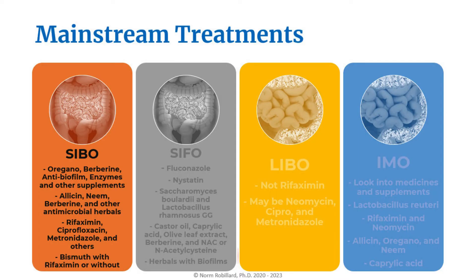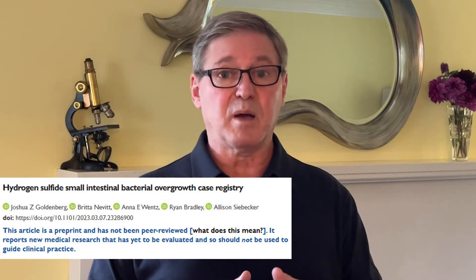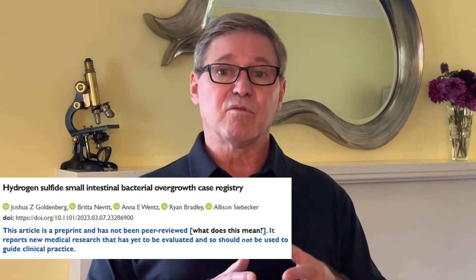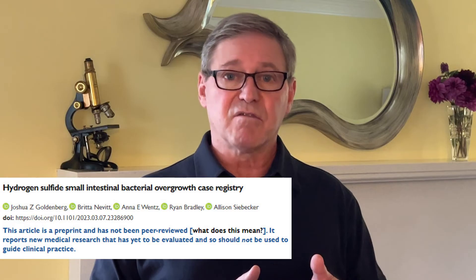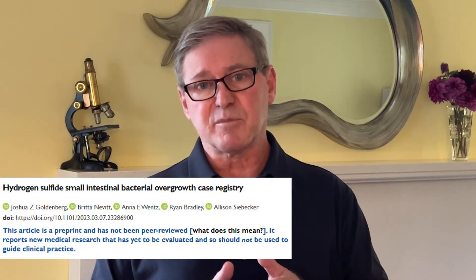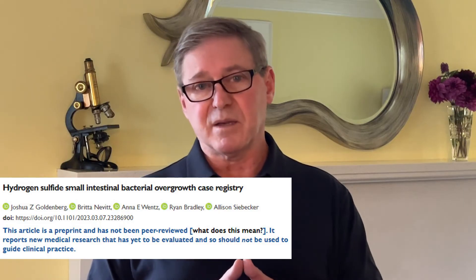For hydrogen sulfide SIBO, bismuth may be effective alone or with rifaximin, though the data is sparse. A survey by Allison Siebecker and colleagues reported that the most significant responses were with people on a low-sulfur diet or people taking bismuth. Bismuth binds to hydrogen sulfide, which may help with symptoms.